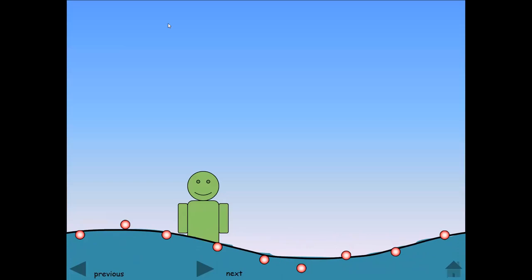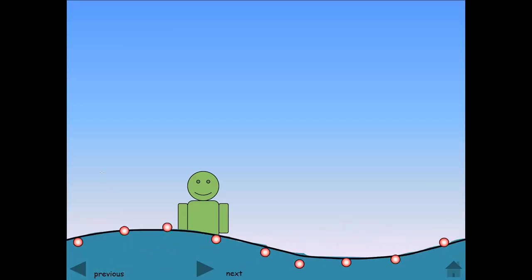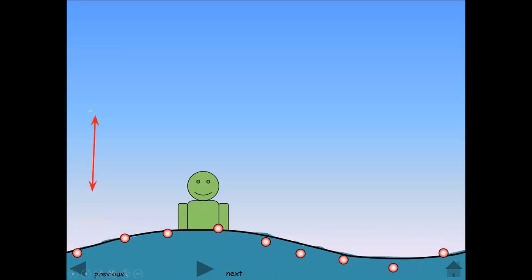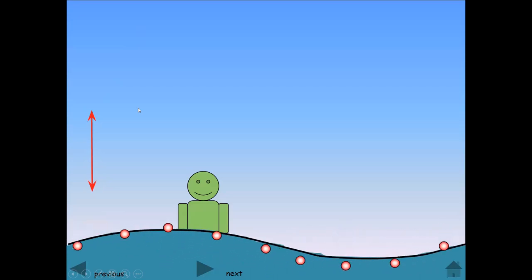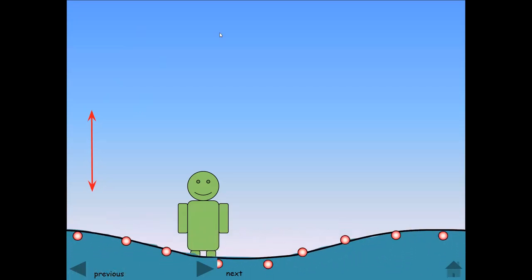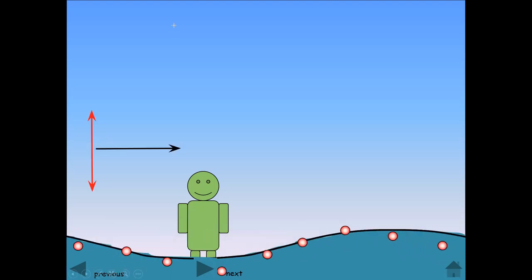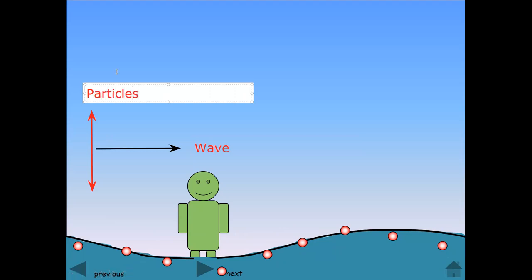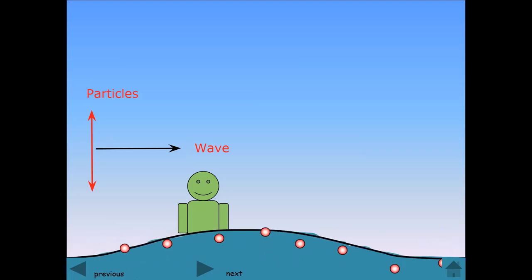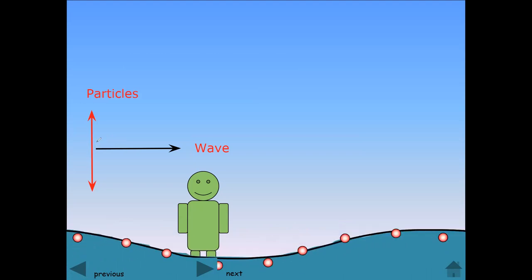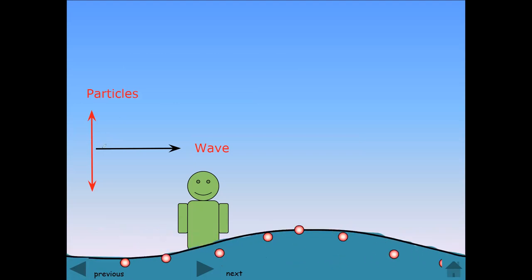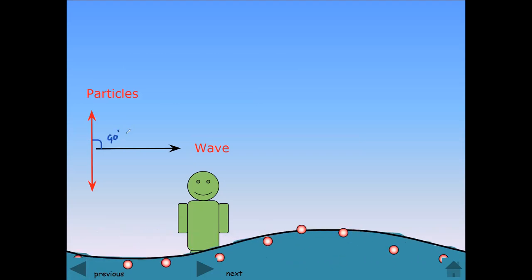As you can see in this image, the particles are moving up and down while the wave is traveling towards the right or left. The direction of the particle movement and the direction of the wave are at 90 degrees to each other. So the angle between the movement of the particle and the direction of the wave is 90 degrees, which we call perpendicular.